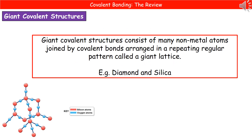The last thing to look at is giant covalent structures. A giant covalent structure consists of many non-metal atoms joined by covalent bonds arranged in a regular repeating pattern — a giant lattice. Examples include diamond and silica; the diagram of silica is shown in the bottom left. Because these are giant structures, we wouldn't write the actual numbers of every atom. Instead we use the empirical formula — so for silica we write it as SiO₂.